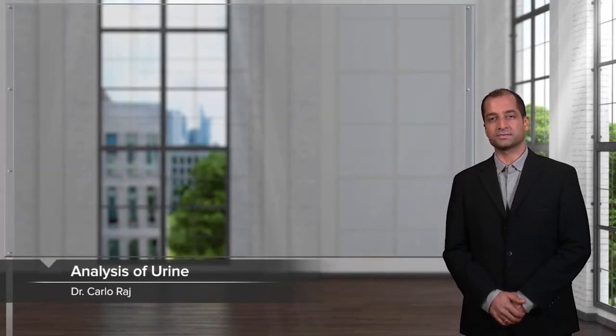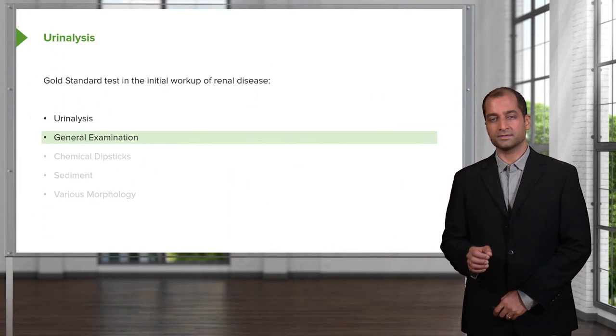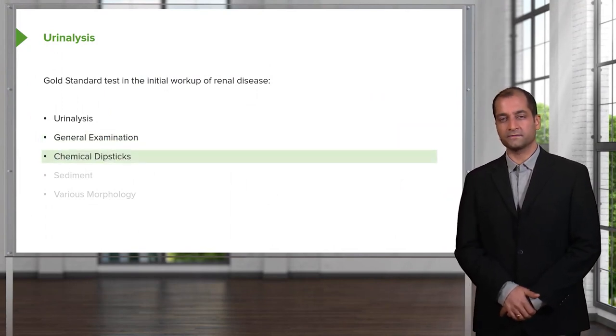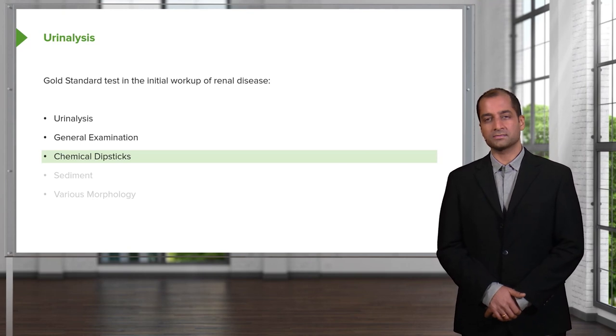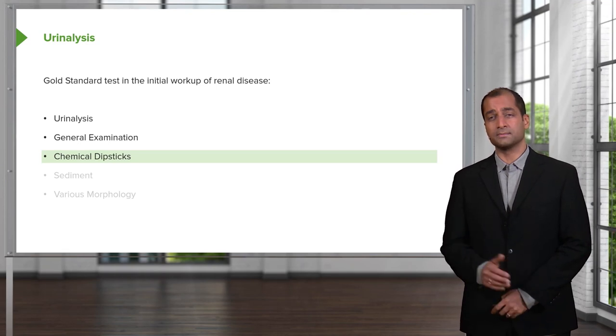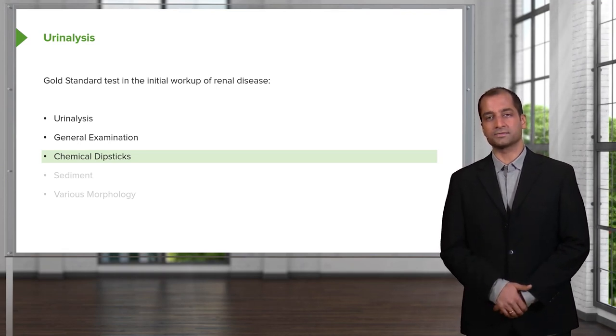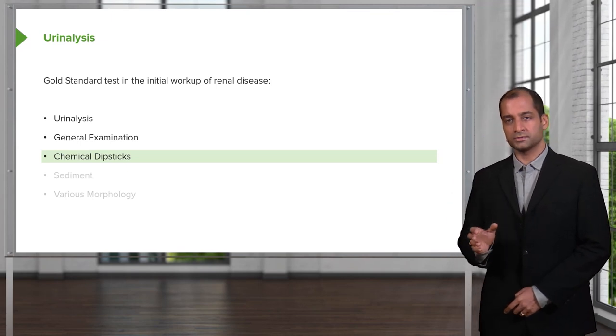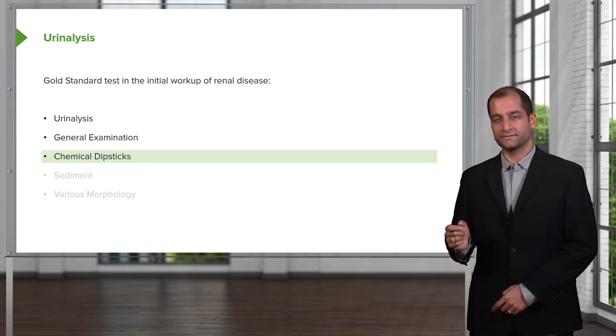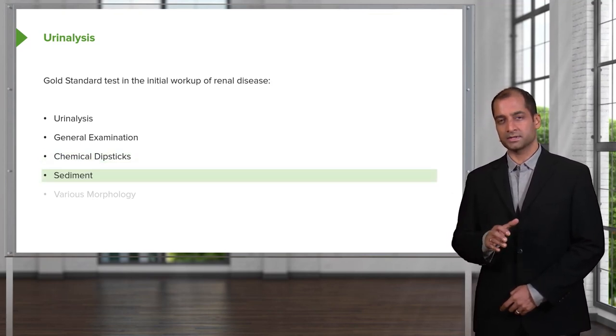Today our topic brings us into the analysis of urine. How important is this? Quite. With urine analysis, we'll take a look at the general examination, the various types of dipsticks that are important for measuring metabolites in the urine. Sometimes when you do a general dipstick you may or may not find the chemical you're looking for based on the suspicion of the diagnosis. So how do you know which dipstick to use? The history. The history comes first.